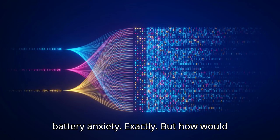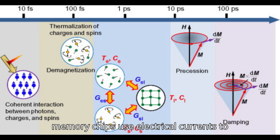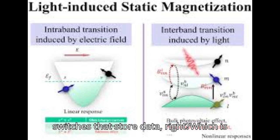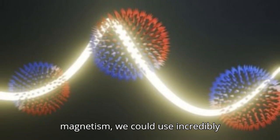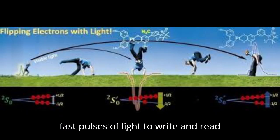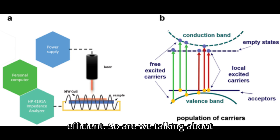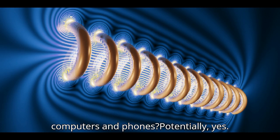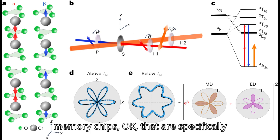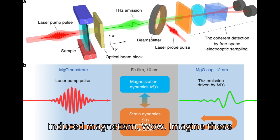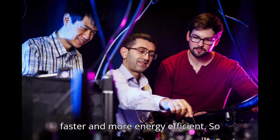But how would that actually work? Would we be talking about a totally new kind of memory chip? Exactly. Right now, memory chips use electrical currents to flip those microscopic magnetic switches that store data, which is a relatively slow and power hungry process. But with light induced magnetism, we could use incredibly fast pulses of light to write and read that data. It's like flipping a light switch instead of cranking a heavy gear - much faster and more efficient. This technology could lead to the development of entirely new types of memory chips that are specifically designed to take advantage of light induced magnetism. Imagine these new chips seamlessly integrated into our devices, making them significantly faster and more energy efficient.